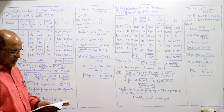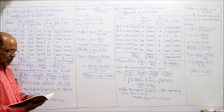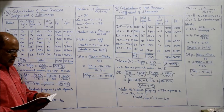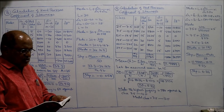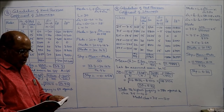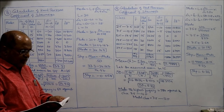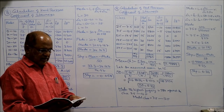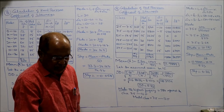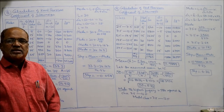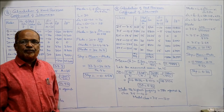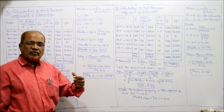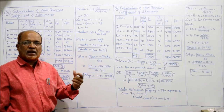Problem number 9: Find Karl Pearson's coefficient of skewness and comment on the result. Class intervals: 3 to 7, 8 to 12, 13 to 17, 18 to 22, 23 to 27, 28 to 32. Frequencies: 108, 580, 175, 80, 32, 80 (total n = 993). The classes are given in inclusive type and must be converted to exclusive type first.